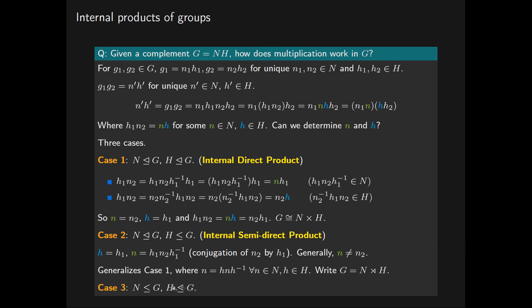There is one final case, and that's when both N and H are subgroups of G with neither necessarily normal. The case where N is a subgroup and H is normal is actually equivalent to the previous case, because we can just swap H and N around in this complement. This final case is called the internal Zappa-Zype product — a further generalization — but we're not going to discuss this in this video or in this series. That's it for part one. In the following parts, we will look at some examples of internal semi-direct products.